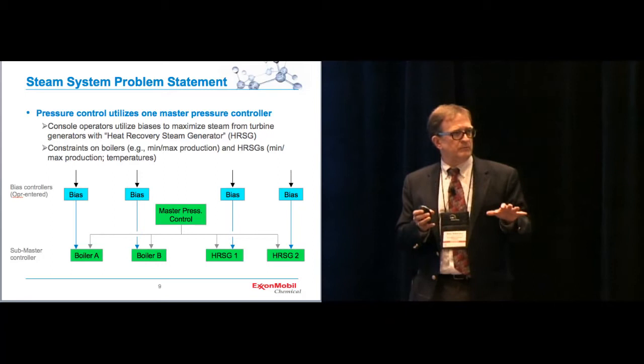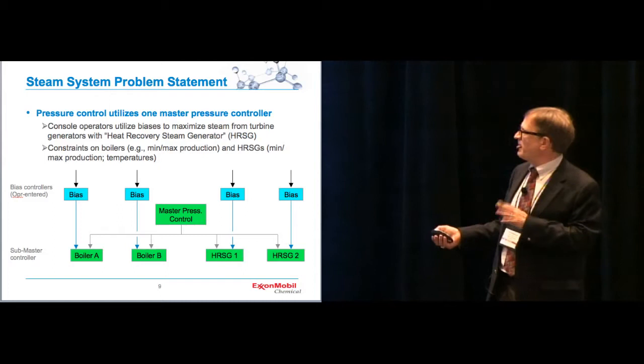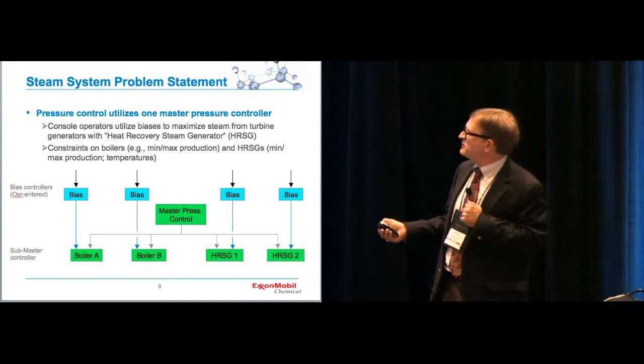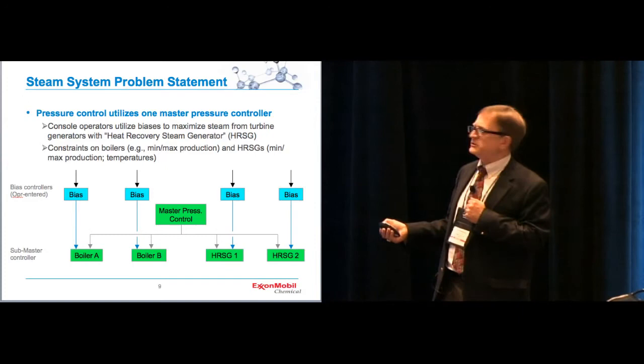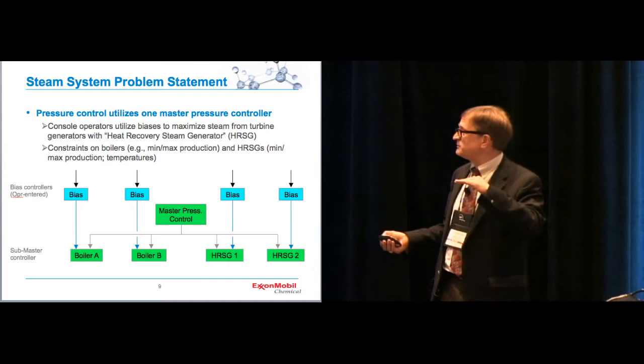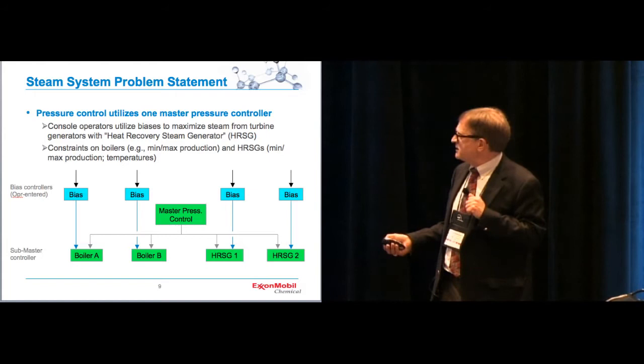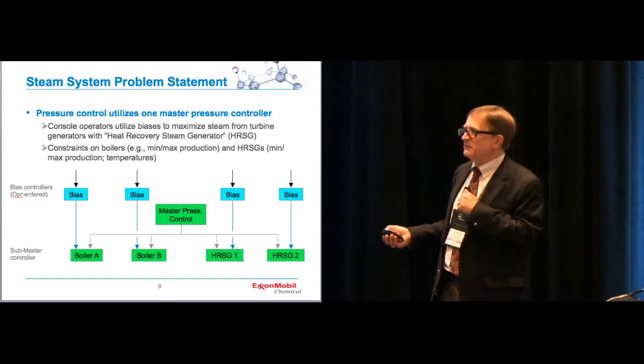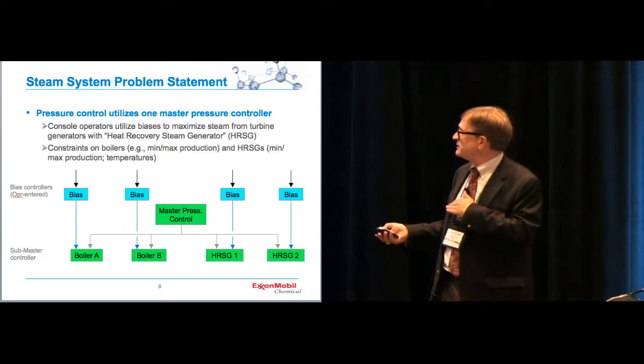So that's the fuel gas system. That's how we ended up using model predictive control to improve the fuel gas system performance at this particular site. Another site came to us with an interesting opportunity. Again, we mentioned that the console operators utilized biases, in this case, to maximize the use of steam from the heat recovery steam generators, or HRSIGs. And the way they had this set up, this is the way we arrived at the site. This is what they had. They had a pressure controller going out to what they call submaster pressure controls to control the pressure, the firing to each of the two boilers and the two HRSIGs. Again, so this pressure is a PID controller monitoring the pressure on the super high-pressure steam system. This is very high pressure. It's about 1,500 PSIG, if you're thinking about what this is. And it's actually manipulating the heat, essentially the heat, or the performance of these boilers and these HRSIGs. The operators would then manipulate this bias that would go out from this master pressure controller on a manual basis and adjust it to try to optimize the system. And unfortunately, that didn't work too well.